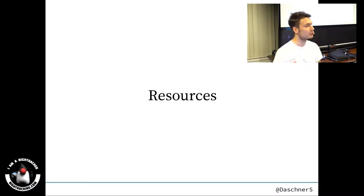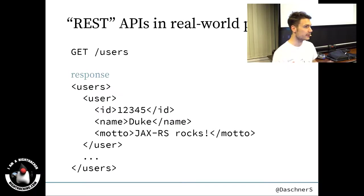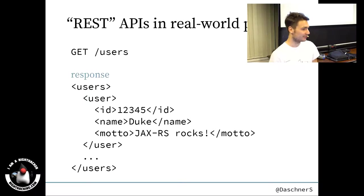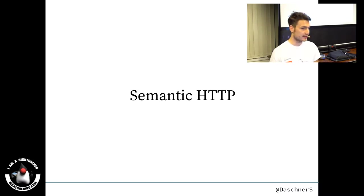REST is about resources. The resources in your API should reflect your business objects. For example, a user management API with a list of users — you're using GET, not POST, to retrieve a list of users, and the response in XML or JSON contains a list of users with IDs, names, and mottos. This is more RESTful because you're using resources, talking about objects not actions, and using semantic HTTP as it was meant to be.